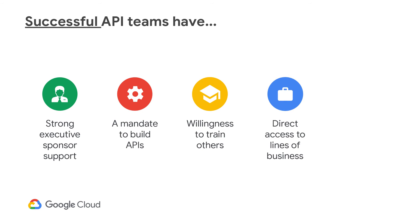Fourth, the API team should have a direct line to the business. There shouldn't be any silos between the business and technical teams. If the API team has a better understanding of the business vision and the impacts to the end consumers, the better the APIs will be, since they will ensure that the business vision is properly achieved.